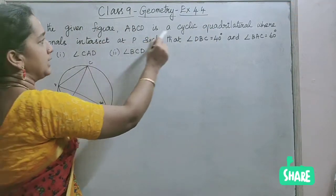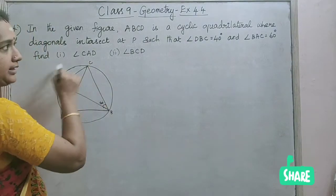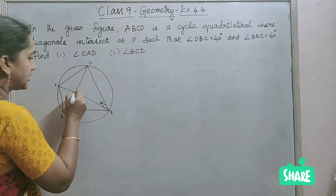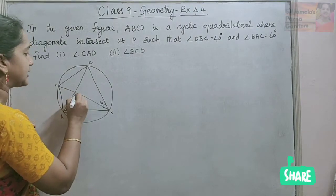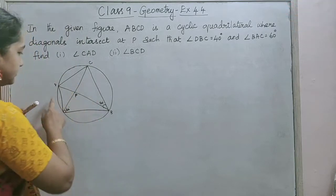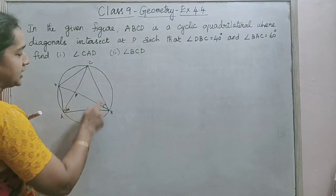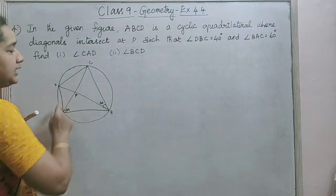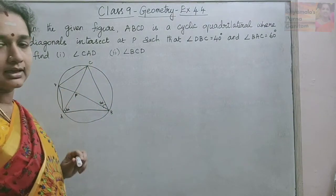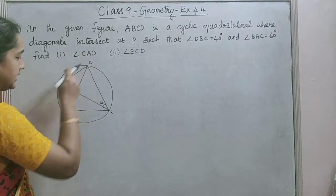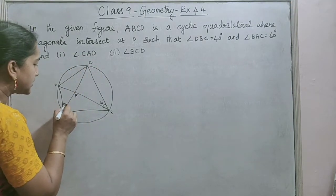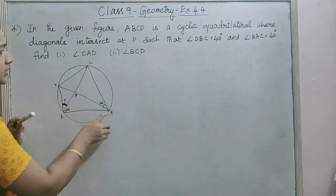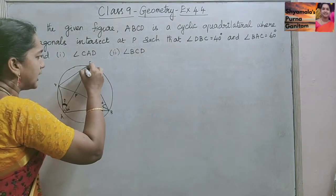Problem 4: In the given figure, ABCD is a cyclic quadrilateral where the diagonals intersect at P. The diagonals AC and BD intersect at point P such that angle DBC is 40 degrees and angle BAC is 60 degrees. We are asked to find angle CAD and angle BCD — these two angles.